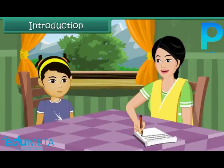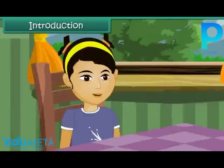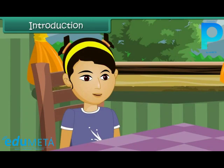Ranjana, I need to know the exact numbers of children who like chow mein, pav bhaji and chole bhature. Only then I can decide the quantity of these items. I see. Mom, I will give you a detailed list of my friends attending the birthday party and their food preferences in another half an hour.